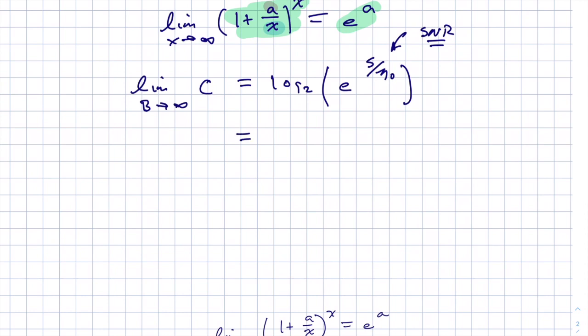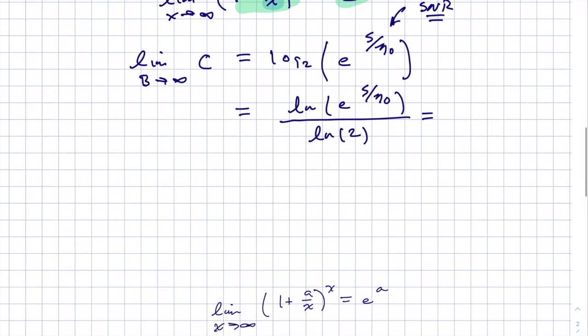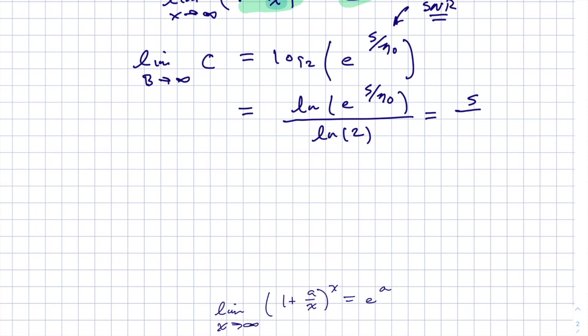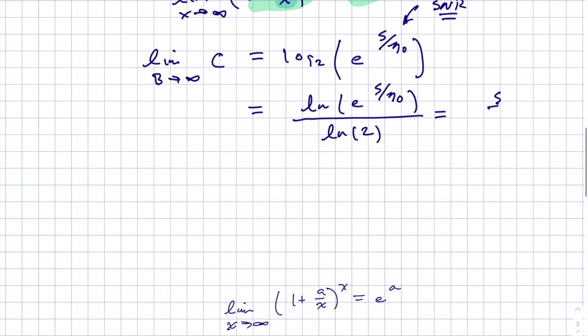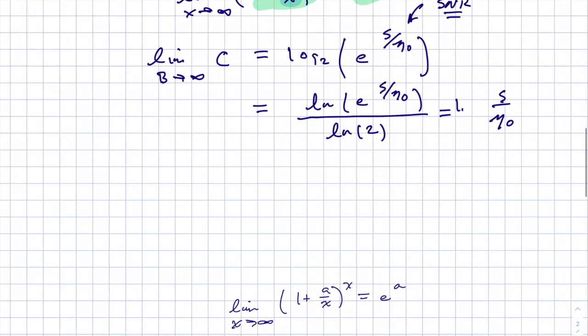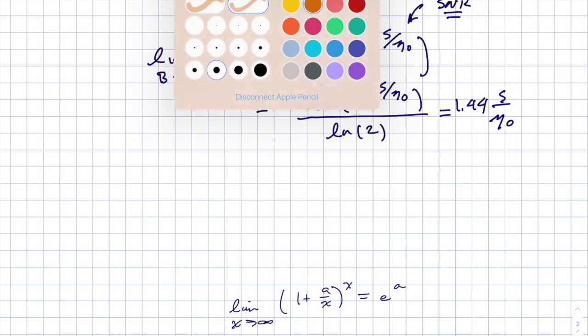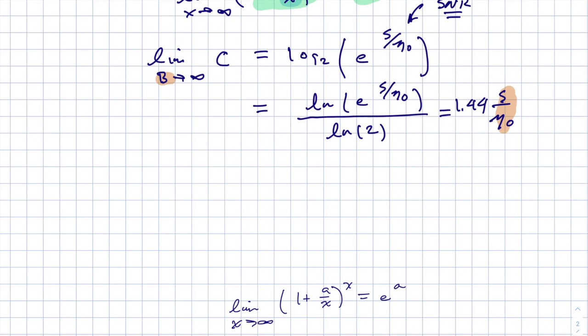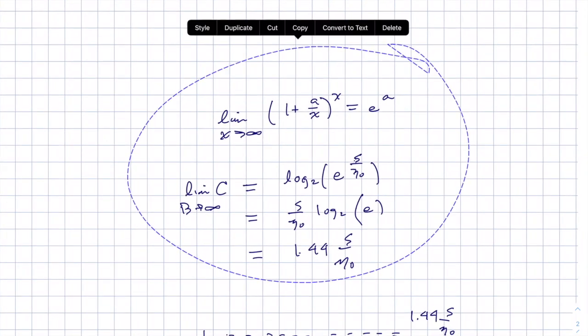So this term is representing our signal-to-noise ratio. And if you do properties of logs, this would be, to get log base 2, you take the natural log of e to the S over n naught, and then you divide by natural log of 2. So log of e raised to the S over n naught is just S over n naught, and then we end up with 1 over log 2, which turns out to be 1.44. So it turns out you have a limit. If you fix the power ratio, so this part is fixed, and you let the bandwidth go to infinity, you have a restriction on how well you can communicate.